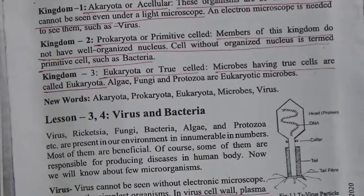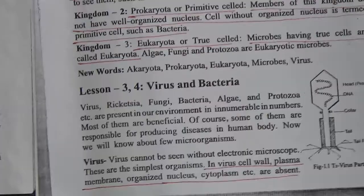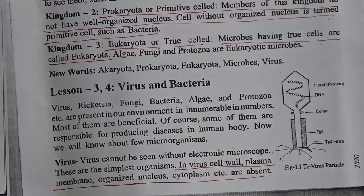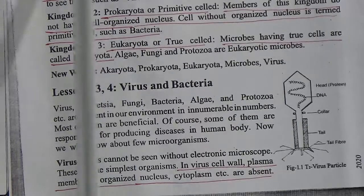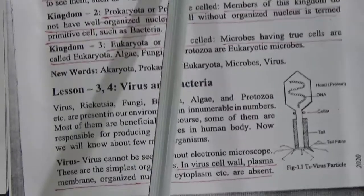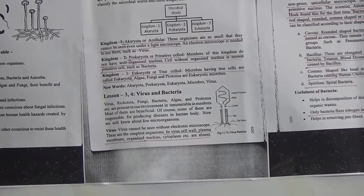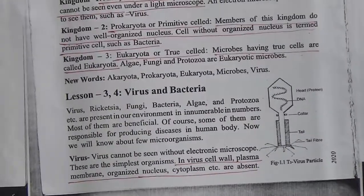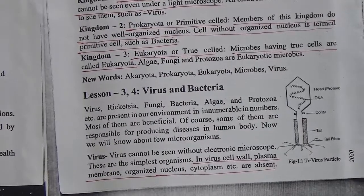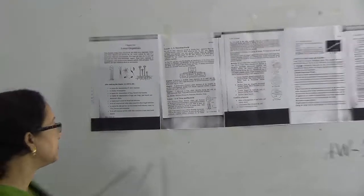True cells means that in their cell there are mitochondria, nucleus, cell membrane, cytoplasm, Golgi body, and other cell organelles. So microbiologists classify the microbial world into three kingdoms: Acariota (cell not properly organized), Prokaryota (no well-organized nucleus), and Eukaryota (true cells with properly organized structure). Now, lesson number three and four: virus and bacteria.